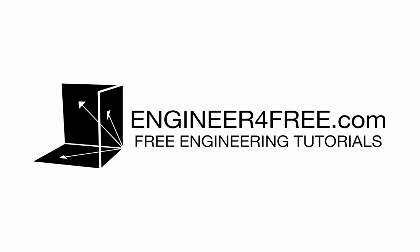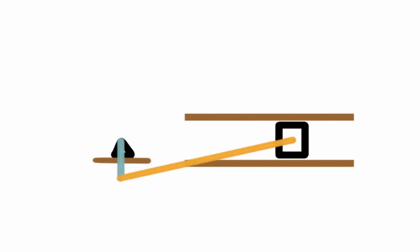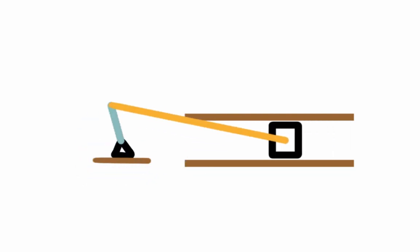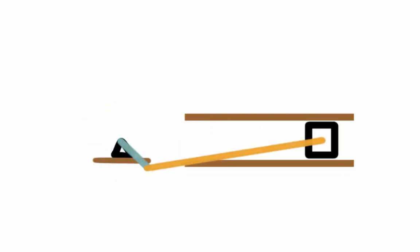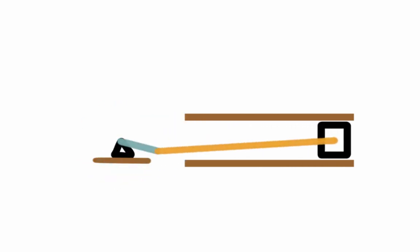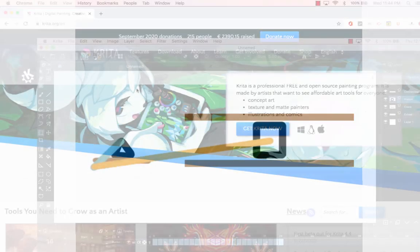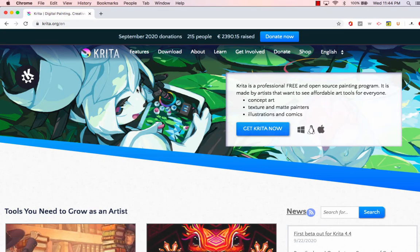Welcome back. In this video I'm going to show you how to make this 2D animation of a crankshaft — I'm actually going to make this exact one that we're looking at. If you have never animated something before, that's totally fine; this is a really good first project. I'm going to be using Krita, which is a completely free drawing program. You can go to Krita.org and click the big button that says 'Get Krita Now.'